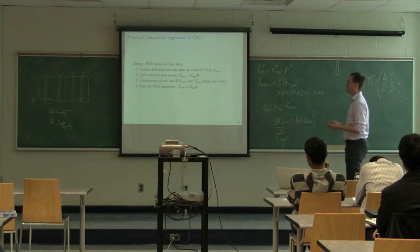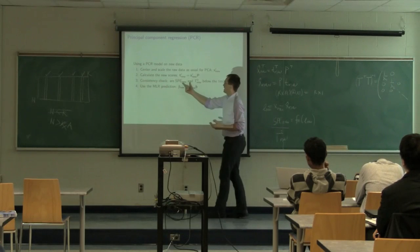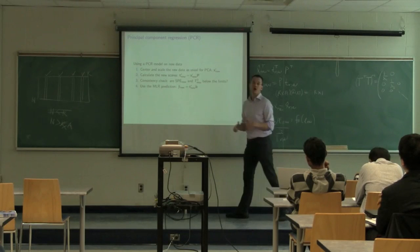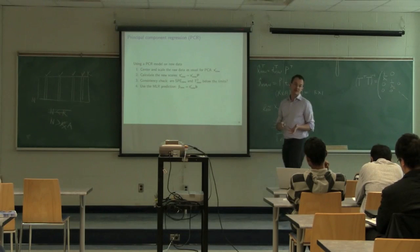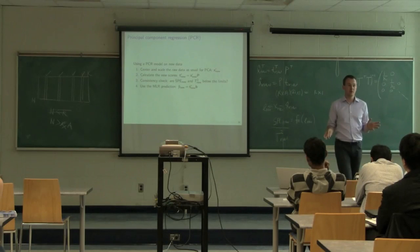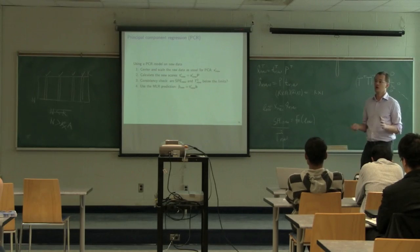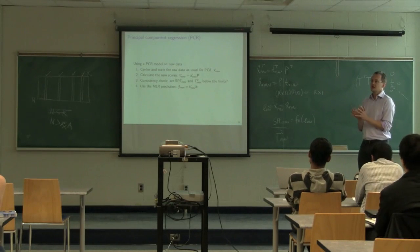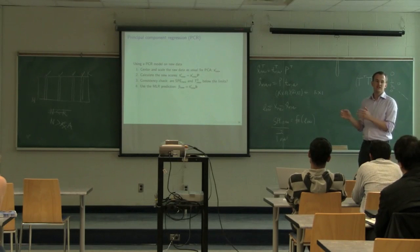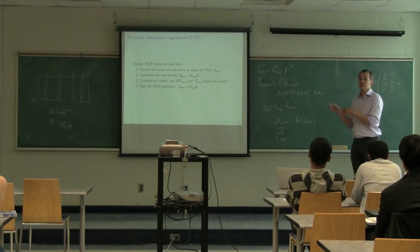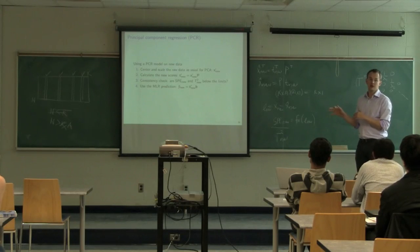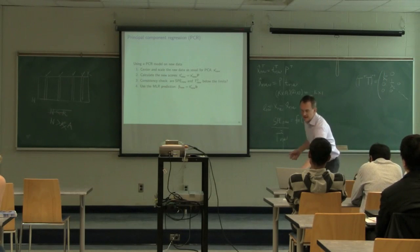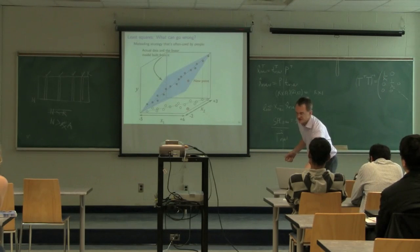It's a safety net. If SPE_new and T-squared_new are both below their respective limits, you can be sure your prediction is reasonable. You have much more certainty that it's not a case of garbage in, garbage out — if garbage goes in, something is going to warn you. Don't go ahead and make your prediction.